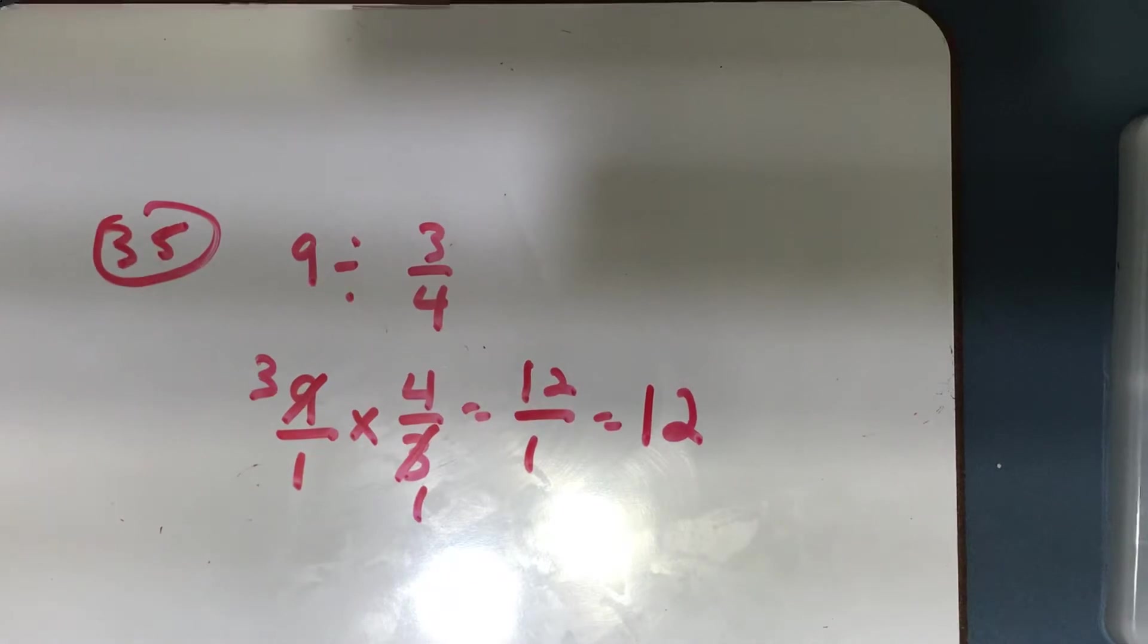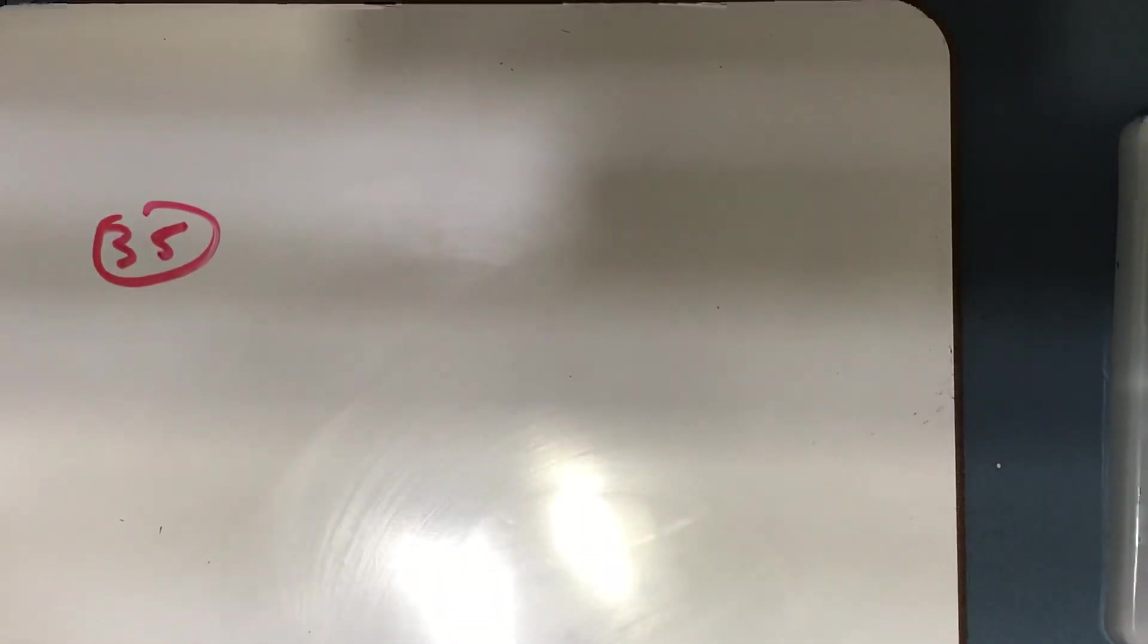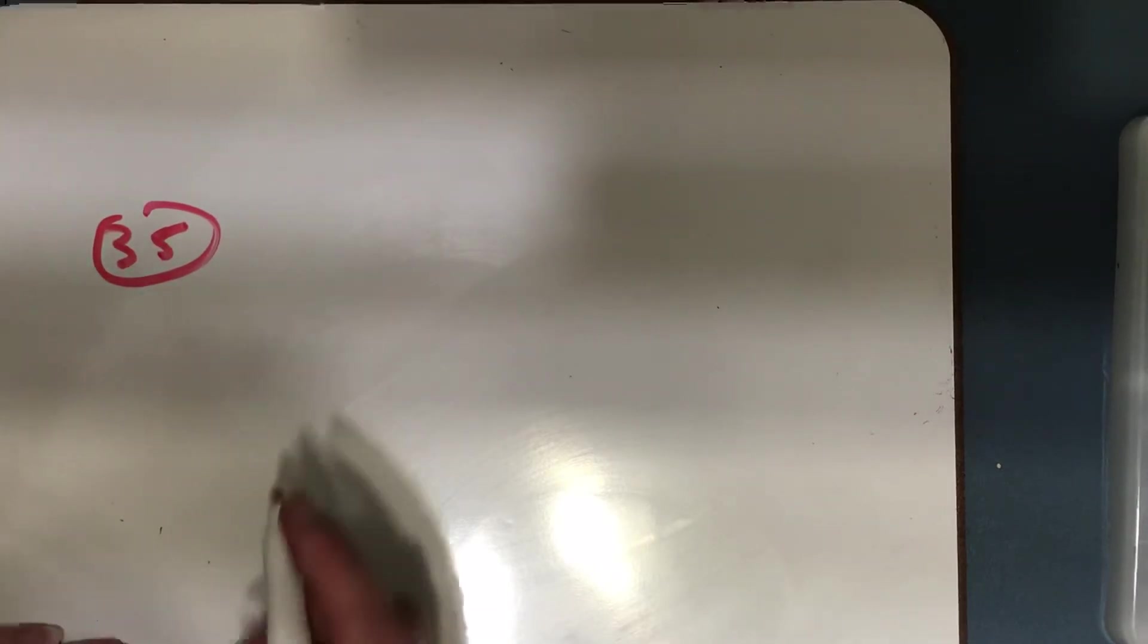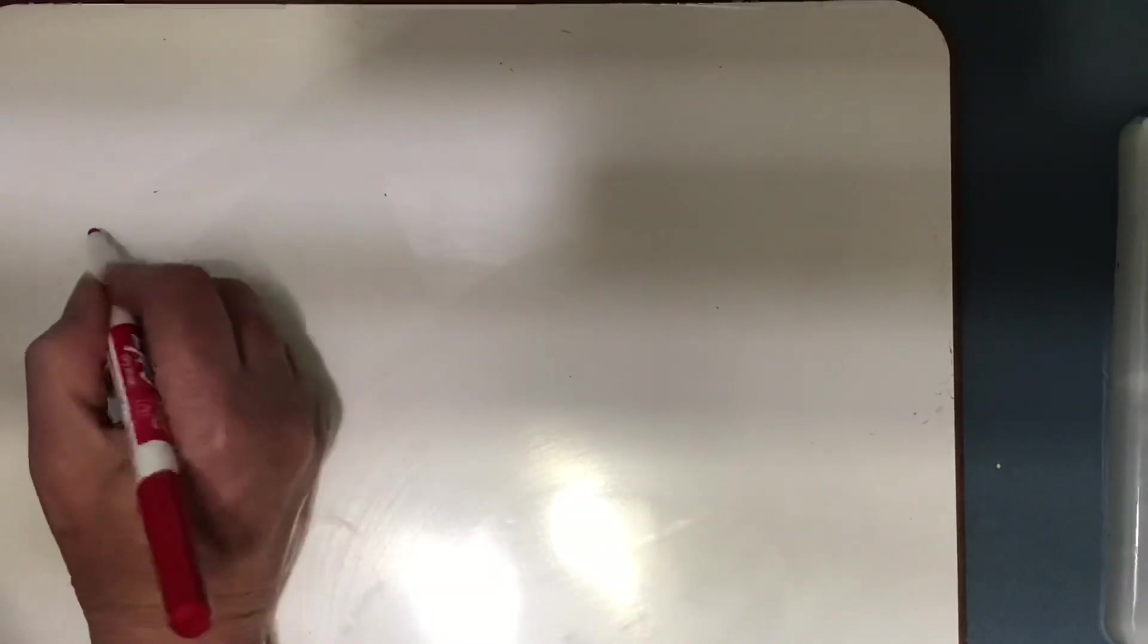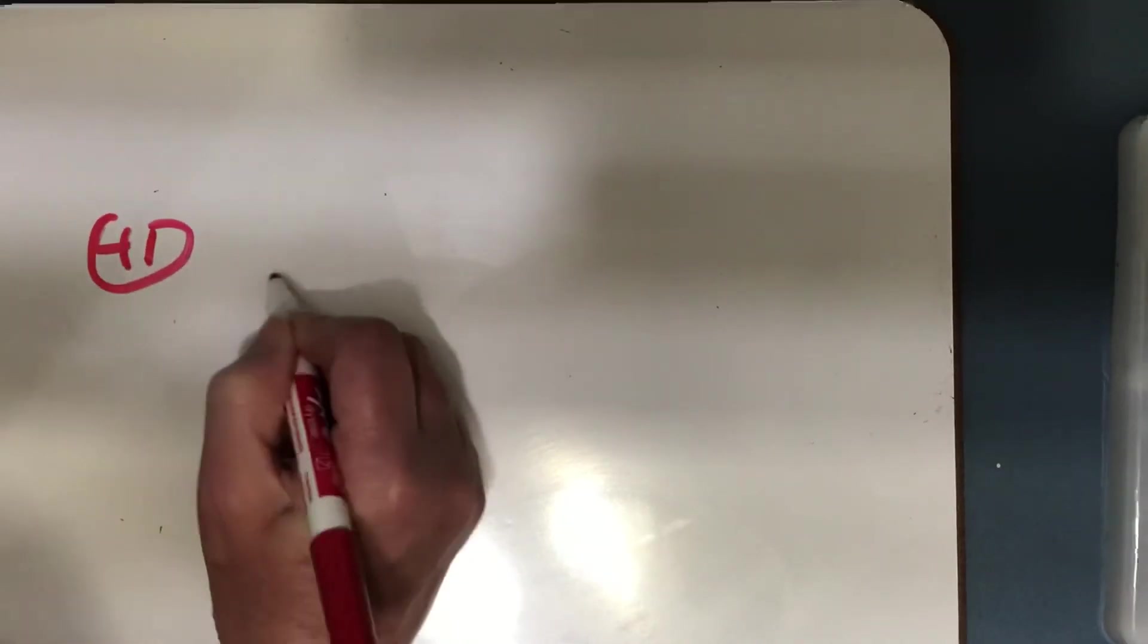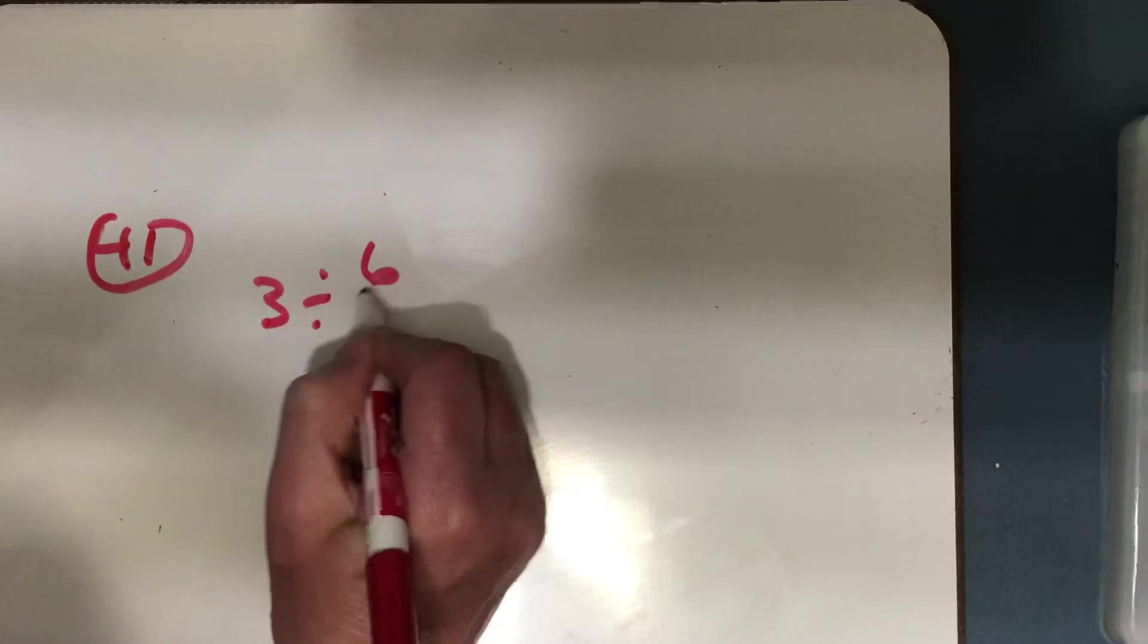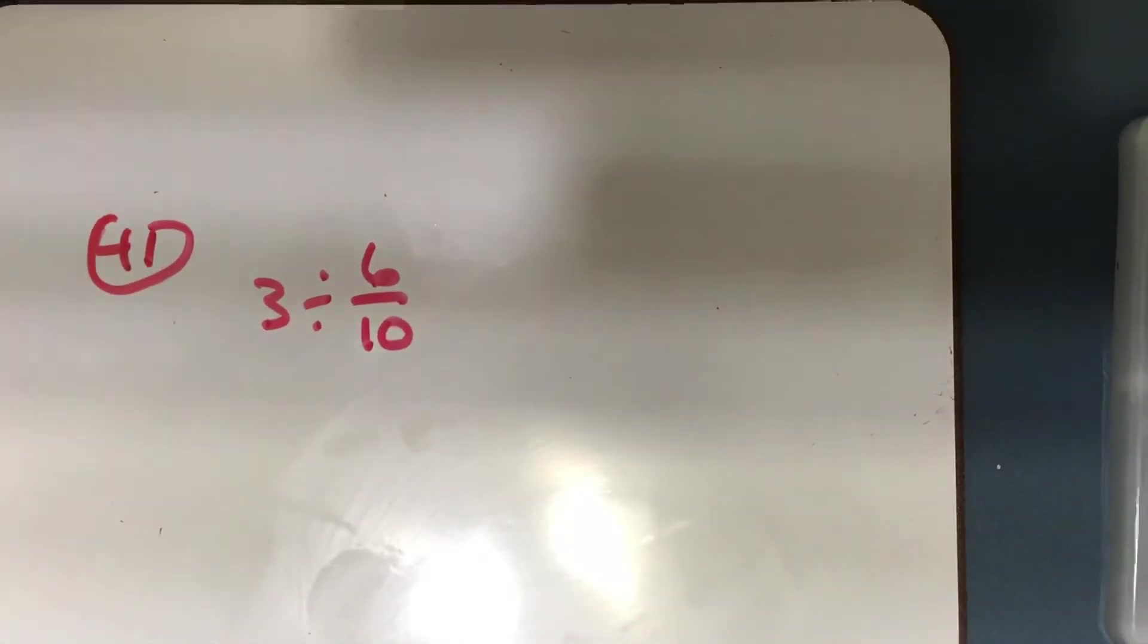When you divide a whole number by a fraction, sometimes you're going to get a whole number, sometimes you're going to get a mixed number. Okay, let's look at number 41. 41 says 3 divided by 6/11. So, 6/11, not 6/10.